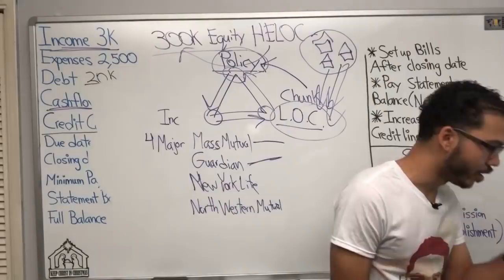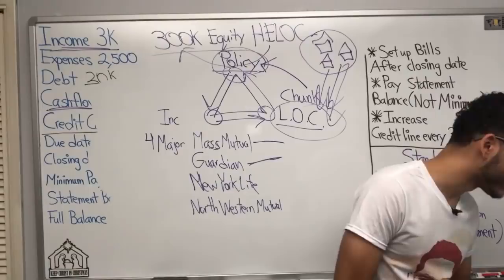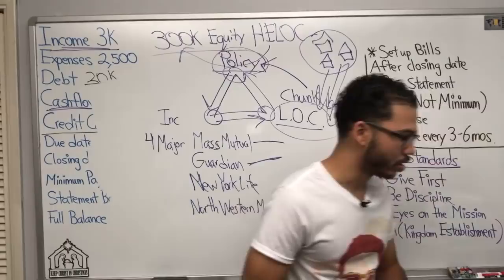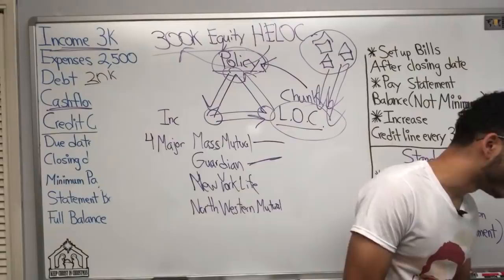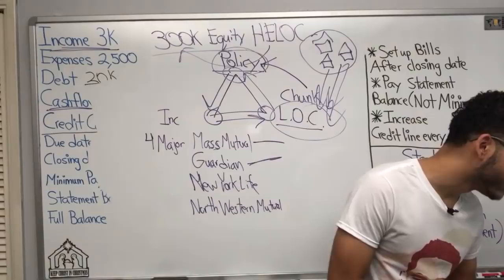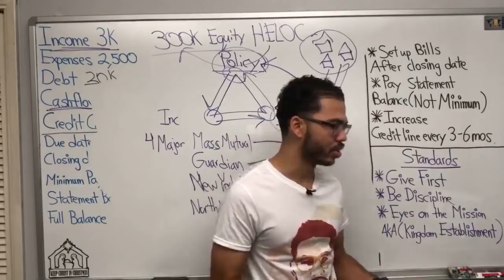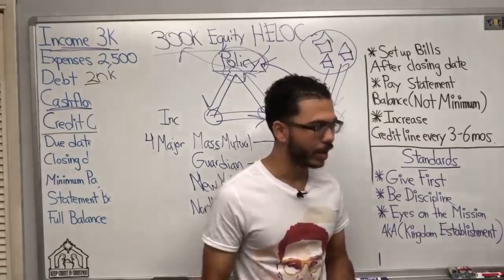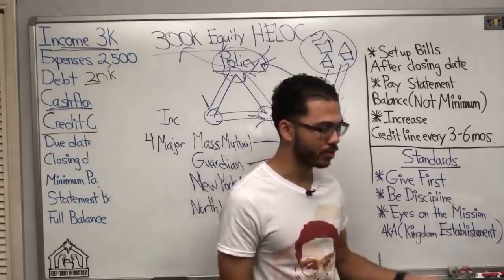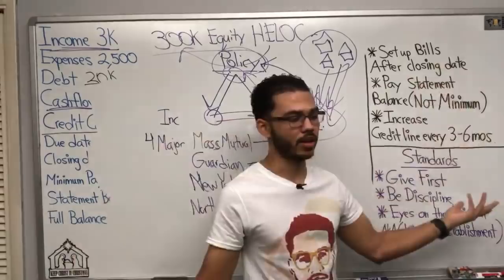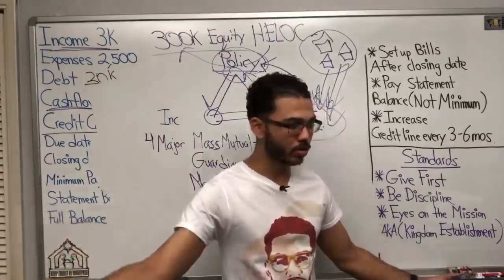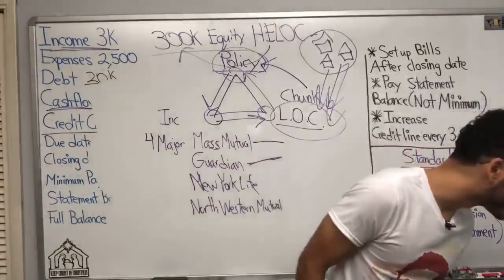If you have a $5,000 line of credit, think of your line of credit like a savings account — except you can increase it and create money out of thin air at any time by walking to the bank and requesting more, which gets approved because your credit is amazing.